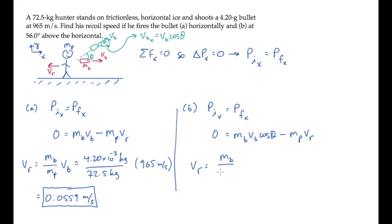Solve this for the recoil speed again and substitute all the numbers. We find that the recoil speed in this case is 0.0313 meters per second, slower than it was in Part A.